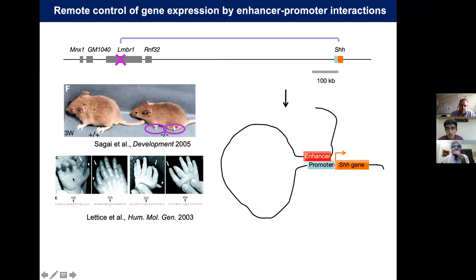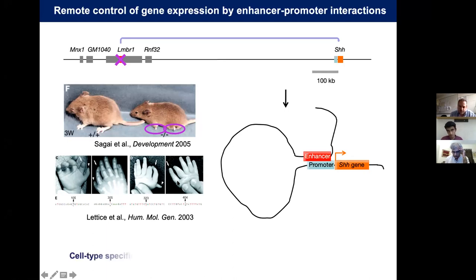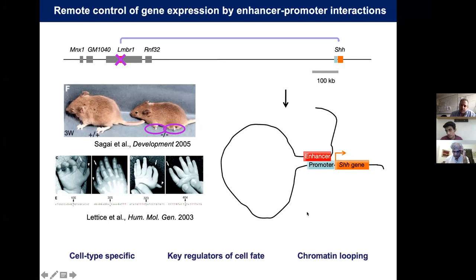Remarkably, the same gene arrangement and regulatory distances are preserved in humans, and single point mutations in this enhancer lead to polydactyly malformations in humans as well. So enhancers are cell-type-specific gene regulatory elements — key regulators of cell fate — and they convey regulatory information over sometimes very large genomic distances, up to megabases, through chromatin looping.